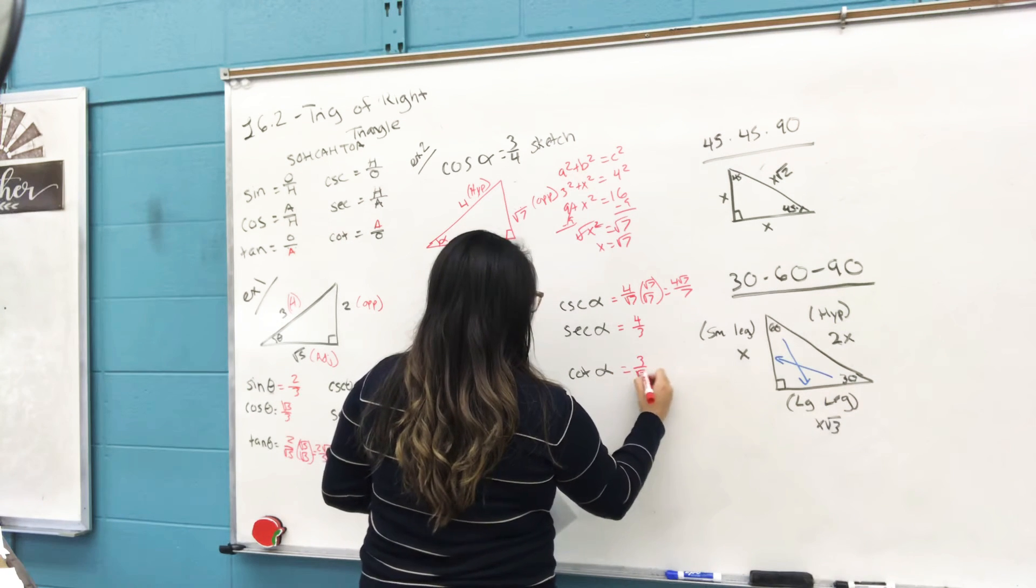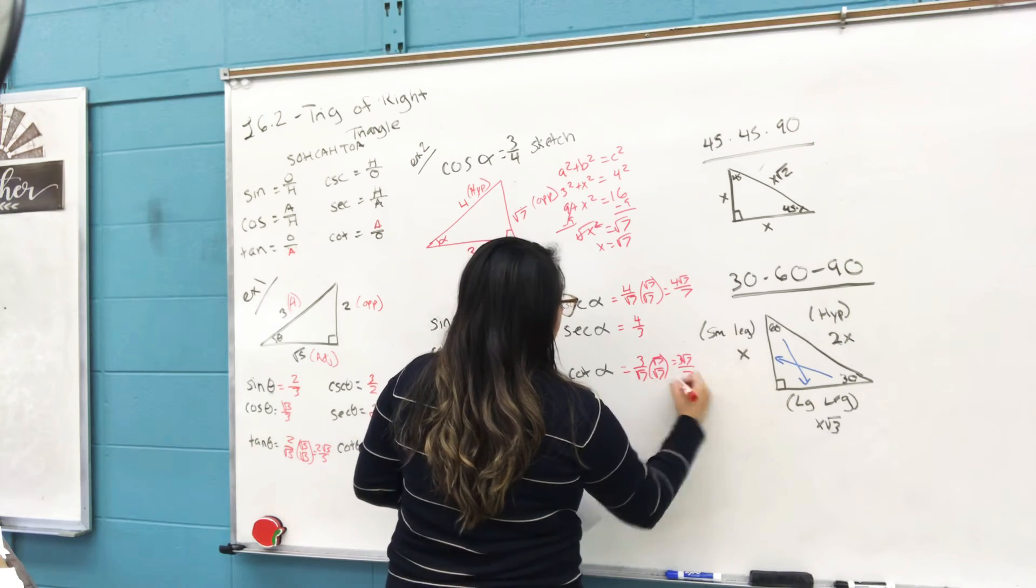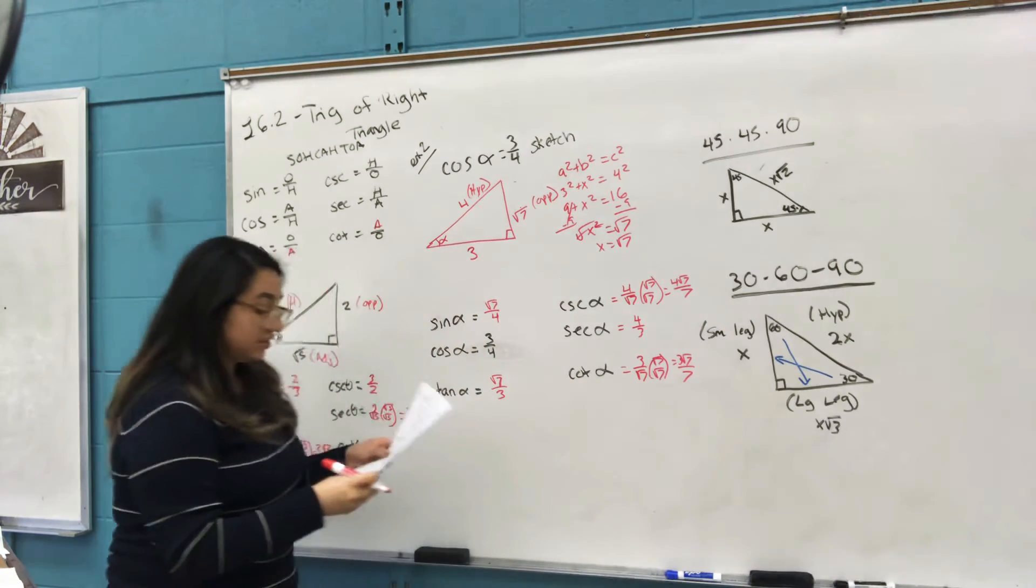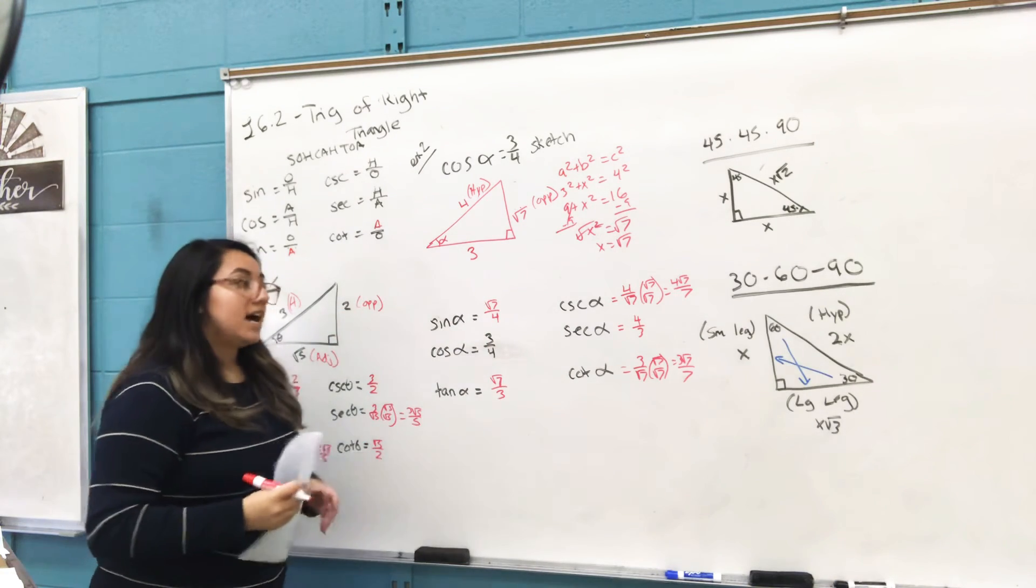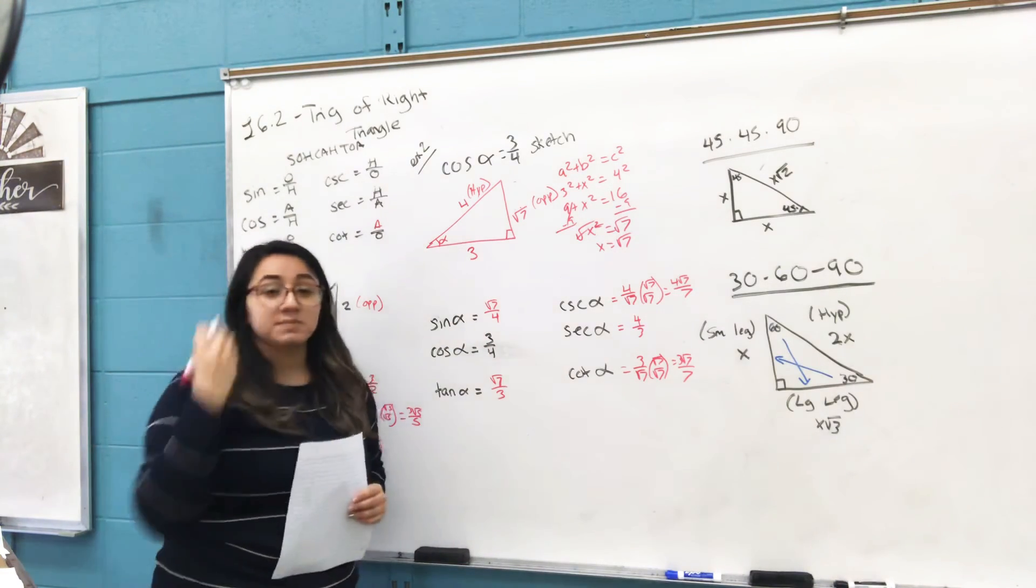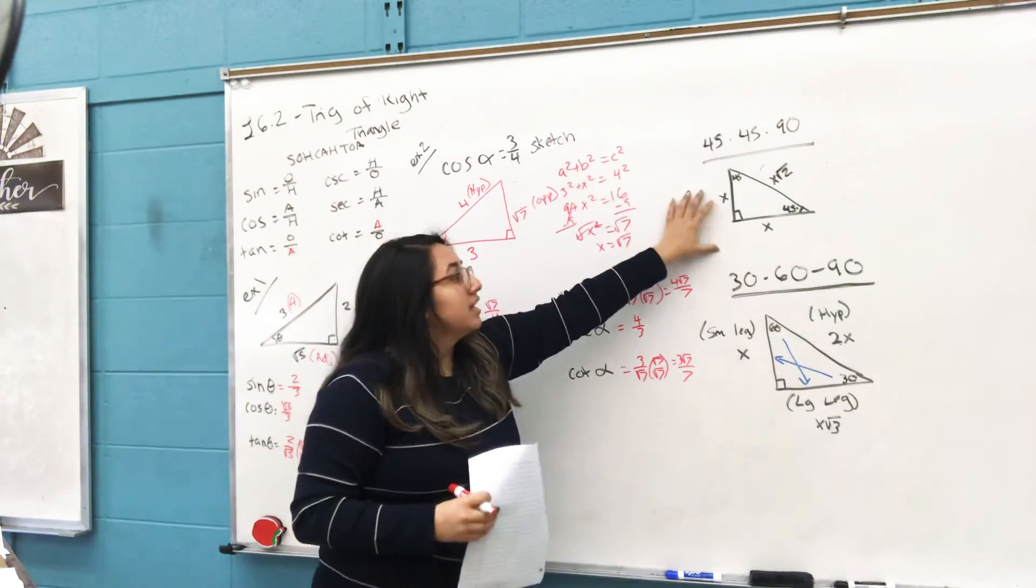Cotangent: same thing, you flip it. When you flip it, you get 3 over √7. Rationalize the denominator, and therefore you get those answers. So then this will be your answers for all of these. On your homework, I will ask for specific kinds; I can't have you write all of these for your homework assignments.